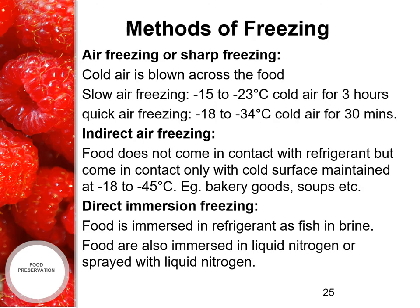The methods of freezing: first is air freezing or sharp freezing, where cold air is blown across the food. There are two sub-methods — slow air freezing and quick air freezing. In slow air freezing, the temperature employed is minus 15 to minus 23 degrees Celsius and cold air is passed for 3 hours. In quick freezing, the temperature employed is minus 18 to minus 34 degrees Celsius and cold air is passed for 13 minutes.